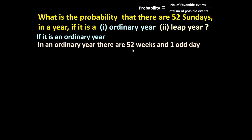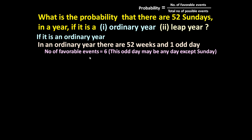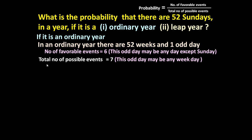If it is an ordinary year, there are 52 weeks and one odd day. 52 weeks means 52 Sundays will already be there. For there to be exactly 52 Sundays, this one odd day should not be a Sunday. So the number of favorable events equals six, because the odd day can be Monday, Tuesday, Wednesday, Thursday, Friday, or Saturday. Total number of possible events equals seven, so probability equals six upon seven.